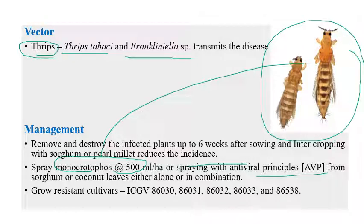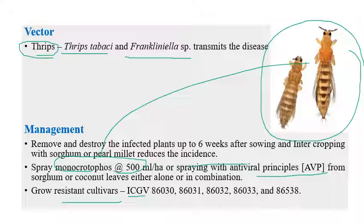Spraying with antiviral principle (AVP) can also be recommended for management of bud necrosis. Resistant cultivars for bud necrosis include ICGV 86030, 86031, 86032, 86033, and 86538.